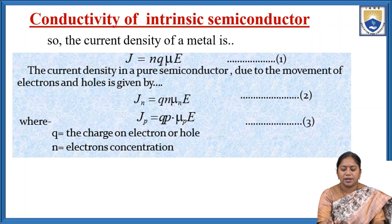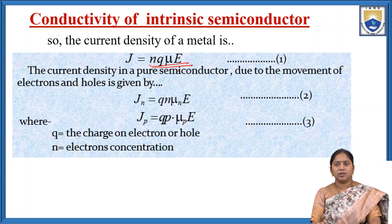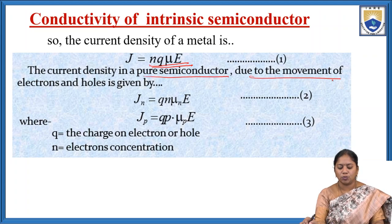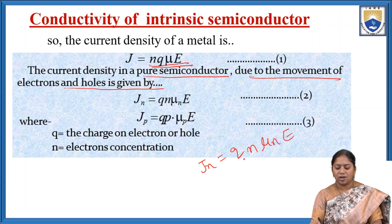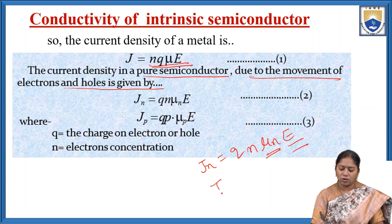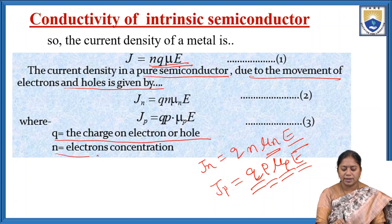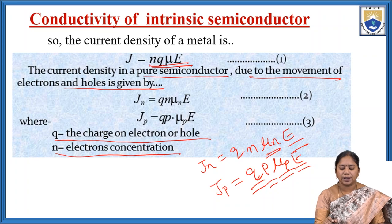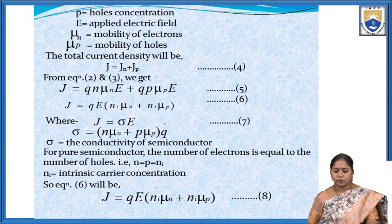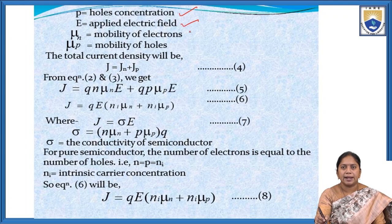The current density for electrons in a pure semiconductor is JN = qNμNE, where q is the charge, N is the number of electrons, μN is the mobility of electrons, and E is the electric field. Similarly for holes, JP = qPμPE, where P is the number of holes and μP is the mobility of holes.